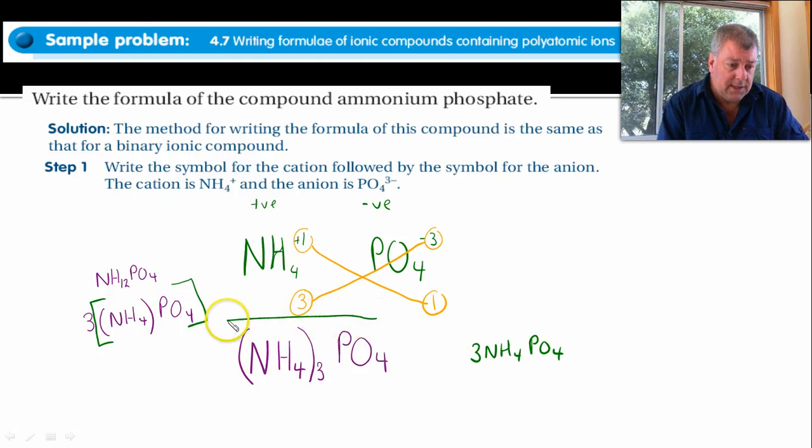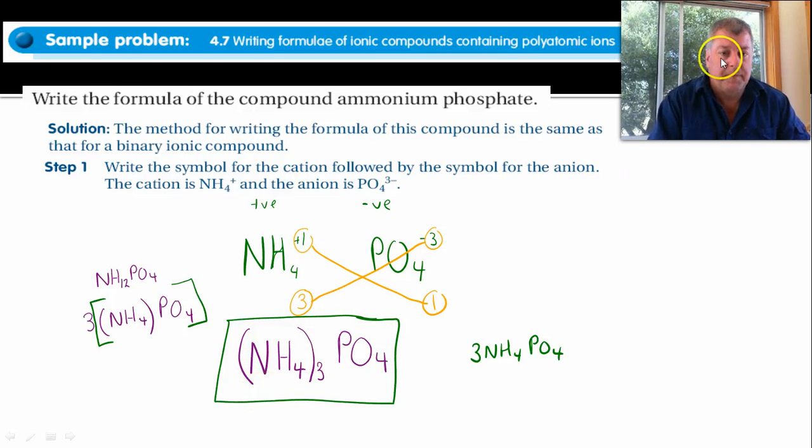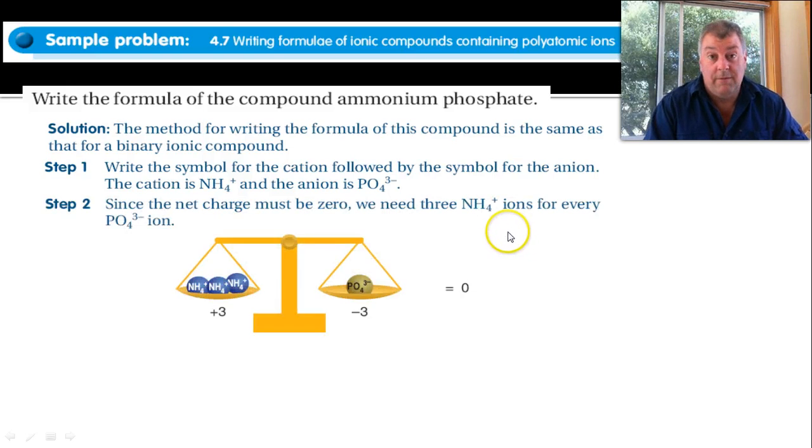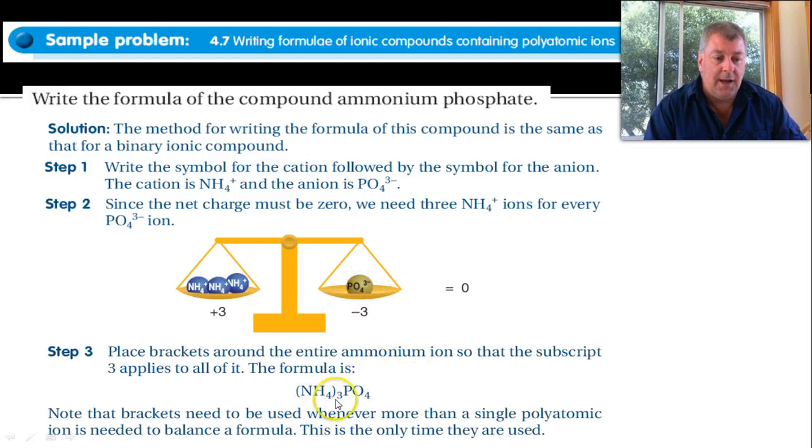The only one that's right is this one. Now just be aware that we're using the brackets, and that's helpful. So a bit of practice. What do they say? They use the invisible balances. They recognize you need three of these and one of those to get the plus 3 and the minus 3, and they write the formula. Note that brackets need to be used whenever more than one single polyatomic ion is needed to balance the formula. This is the only time they are used.